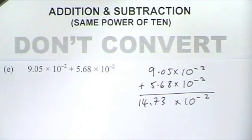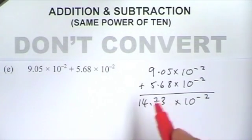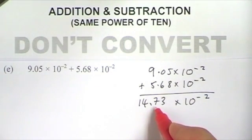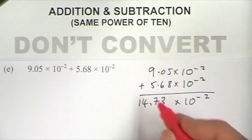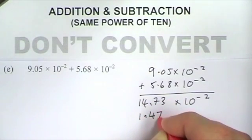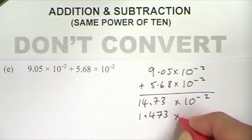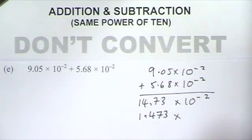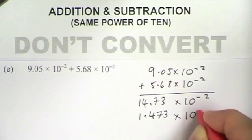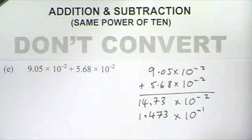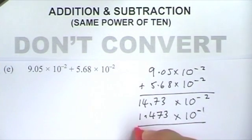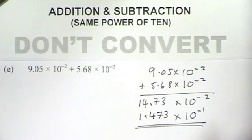However, this first part of the number is not between 1 and 10, so this answer is not in standard form. I've got to change it to standard form by reducing it by a power of 10 to 1.473. Now I've reduced this first part by a power of 10, so I've got to increase the second part by a power of 10 to keep the number the same. So 10 to the minus 2 becomes minus 1 — remember, minus 1 is bigger than minus 2. So my final answer is 1.473 times 10 to the minus 1.